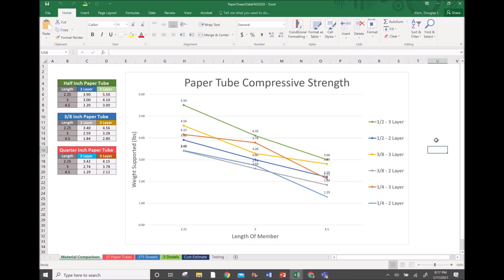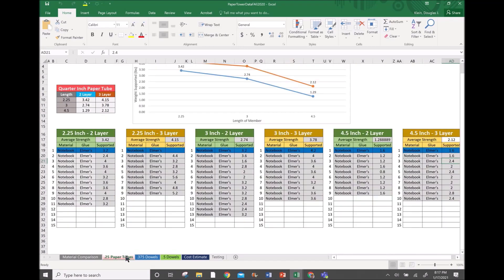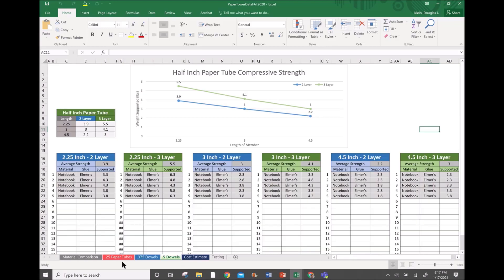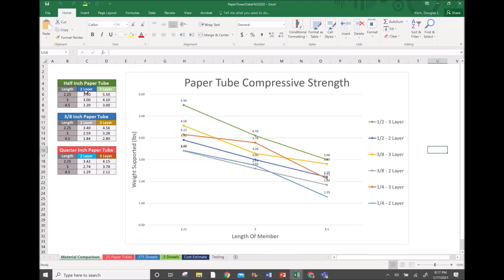To take a little of the guesswork out of which size to utilize, we've developed a testing document that shows tests we've completed on each of those diameters of dowels with both two layers and three layers of material. If I know the strength that I need, I can look at this chart and determine what size material I need to utilize. Once you choose your material, you do need to develop a test to determine if your material is similar to the data provided.